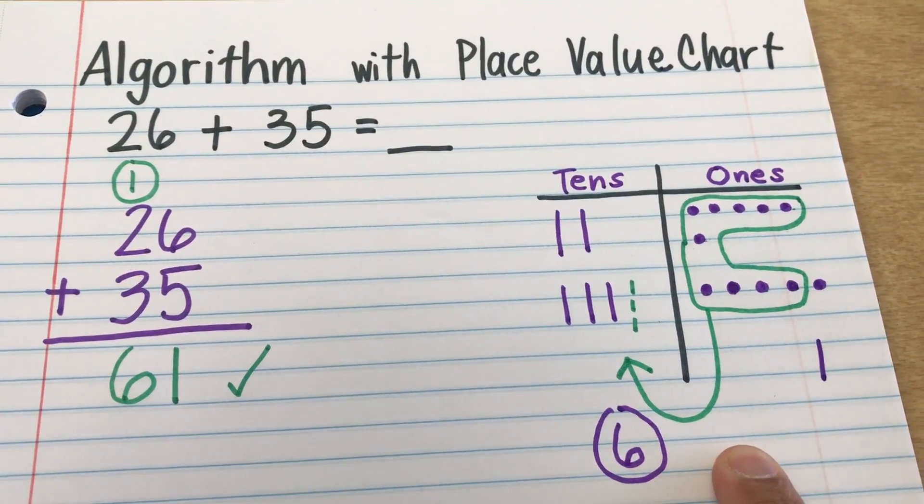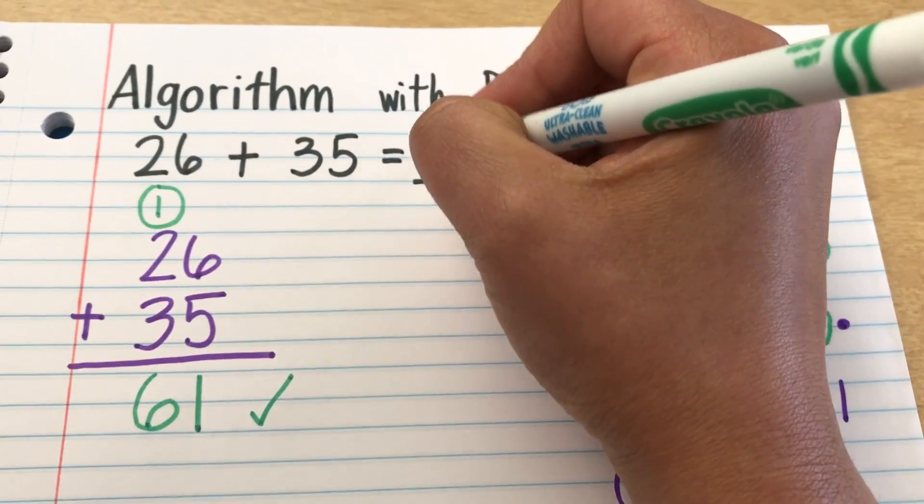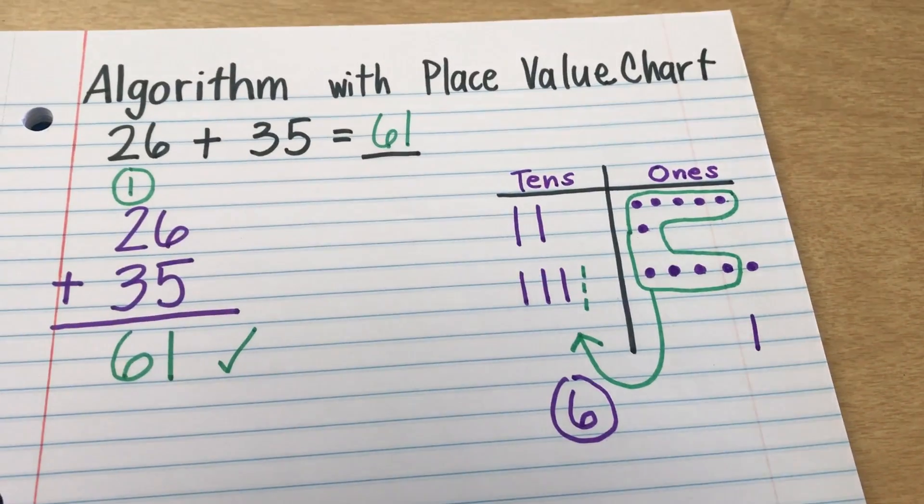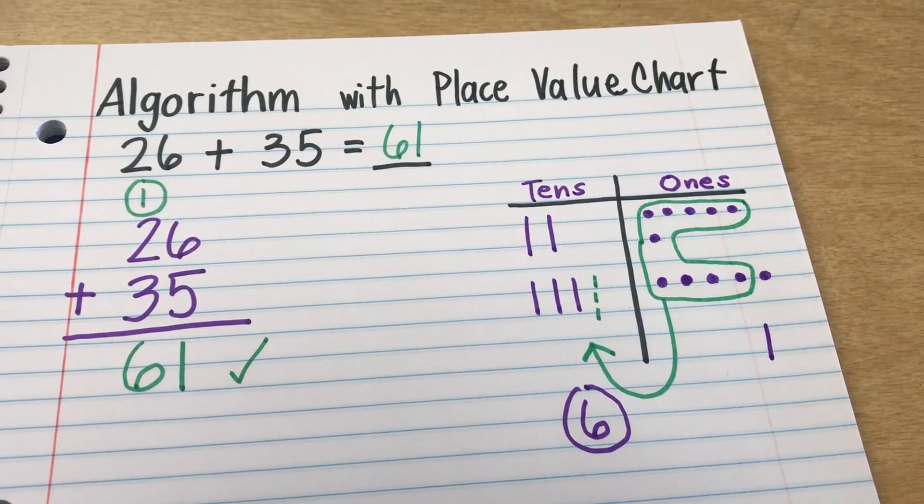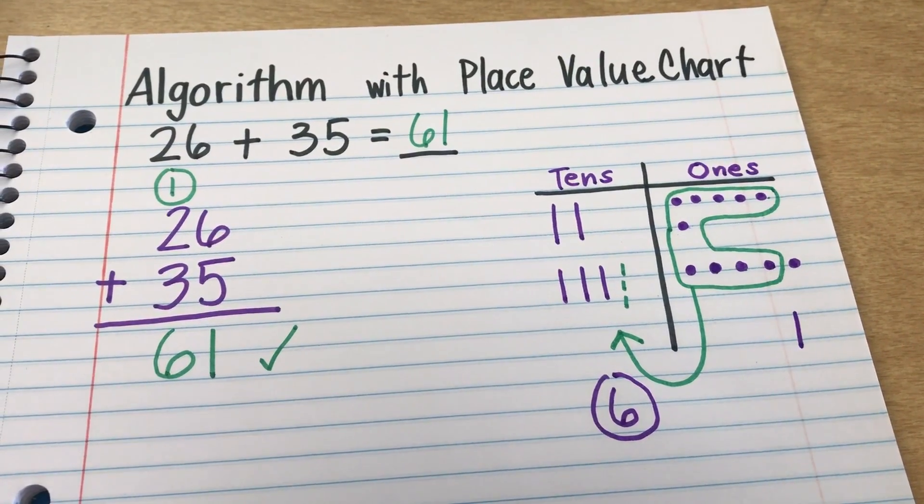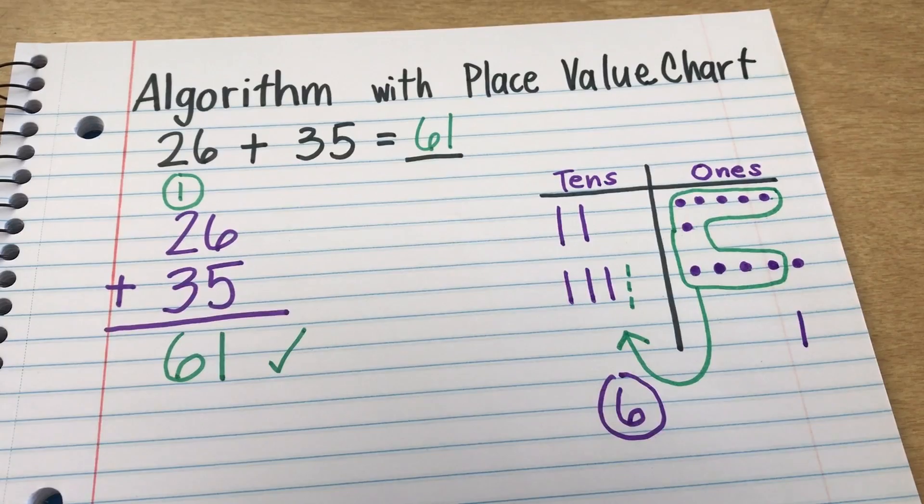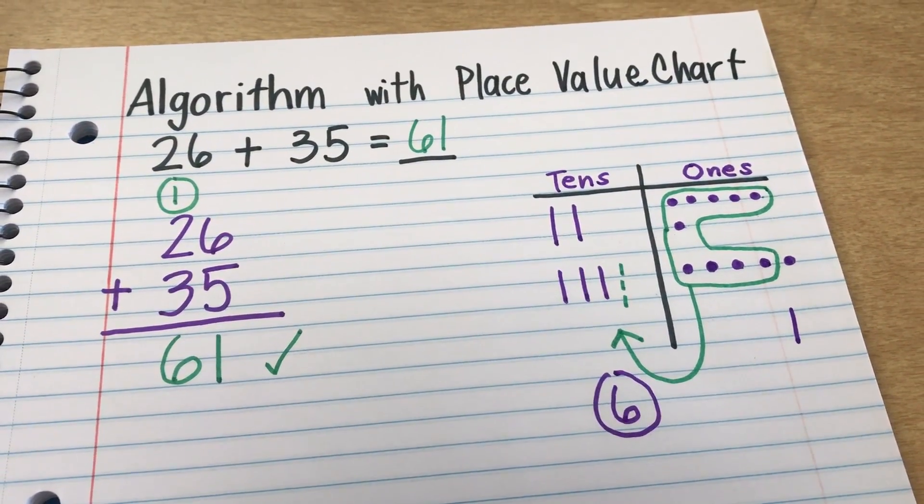Does it match our picture? They both match. Let's go ahead and put it into our original equation. Alright? And that is algorithm with place value chart. Be sure to rewind and watch the video again if you need more assistance. Okay? Talk to you guys soon. Bye!